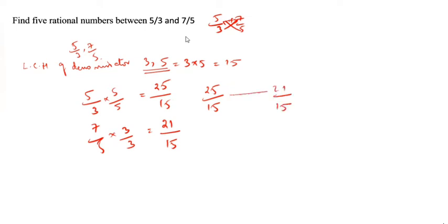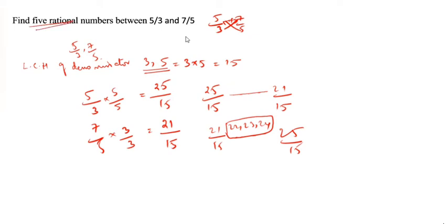Okay. In this, you see how much is there between 21 by 15 up to 25 by 15? 22, 23, 24 — only 3 numbers are there, but we need 5 rational numbers. So what we will do? We need to get 5 rational numbers. Again, you have to multiply by 2 by 2. We only need 2 more, so 2 by 2 is enough. So, 25 by 15 into 2 by 2 equals 50 by 30.